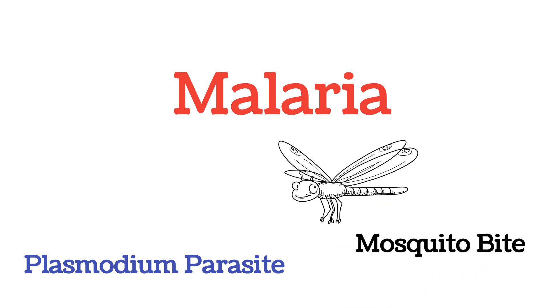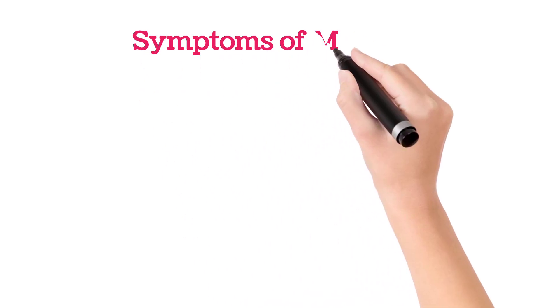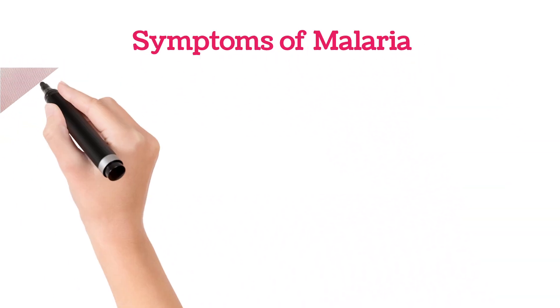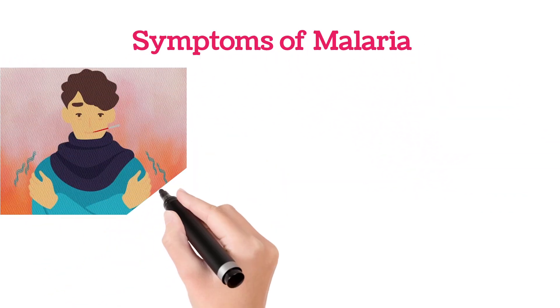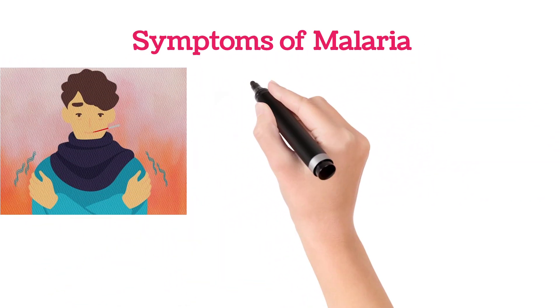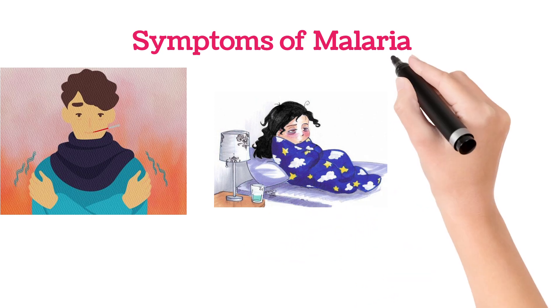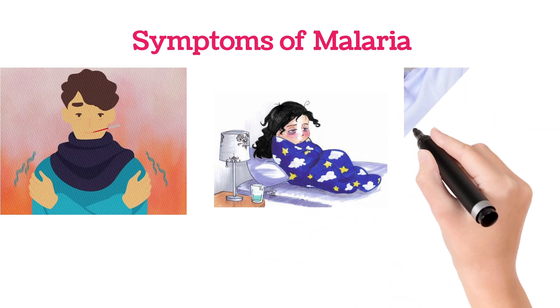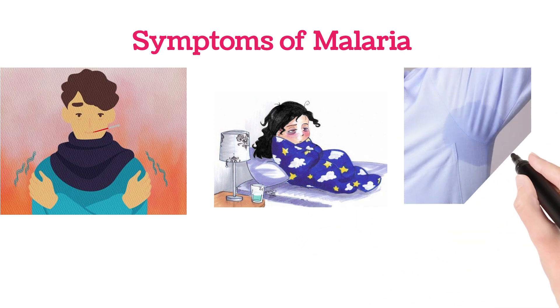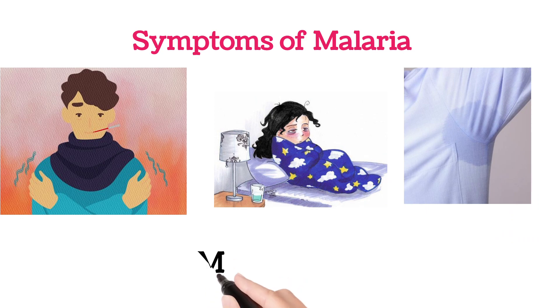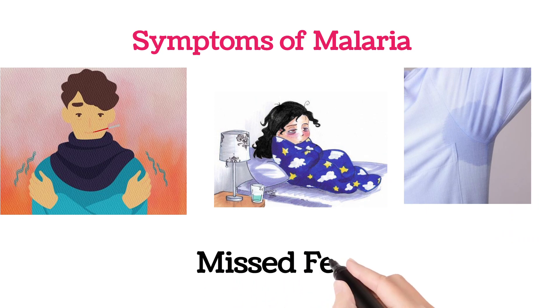Whenever a person has malaria, it usually starts with shivering and chills, followed by high fever, then sweating and a return to normal temperature. Generally, in malaria, there is a missed fever pattern.